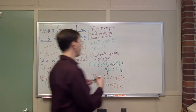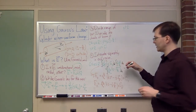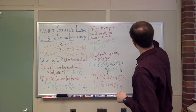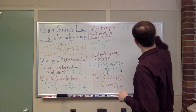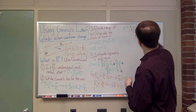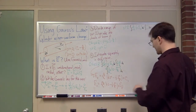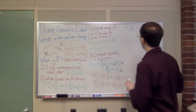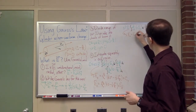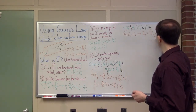Next I'll look at my second region, s greater than or equal to r. I have the same idea, except the right-hand side is much easier — rho is zero. So multiplying both sides by s, I get d/ds of (s · E_s) equals zero. Integrating both sides, s times E_s equals a constant c2. In other words, E_s in this region equals c2 over s.